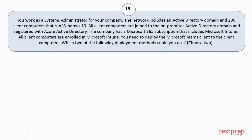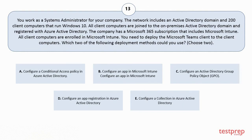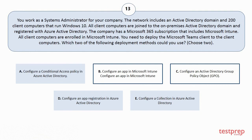Question 13. You work as a systems administrator for your company. The network includes an Active Directory domain and 200 client computers that run Windows 10. All client computers are joined to the on-premises Active Directory domain and registered with Azure Active Directory. The company has a Microsoft 365 subscription that includes Microsoft Intune. All client computers are enrolled in Microsoft Intune. You need to deploy the Microsoft Teams client to the client computers. Which two of the following deployment methods could you use? Choose two. Your options are: A. Configure a Conditional Access Policy in Azure Active Directory. B. Configure an App in Microsoft Intune. C. Configure an Active Directory Group Policy Object. D. Configure an App Registration in Azure Active Directory. E. Configure a Collection in Azure Active Directory. The correct answers are Option B and C.